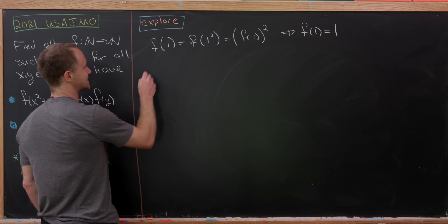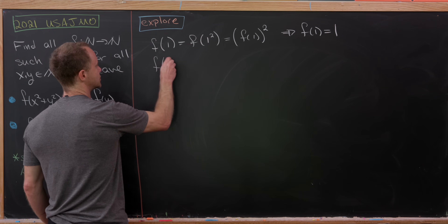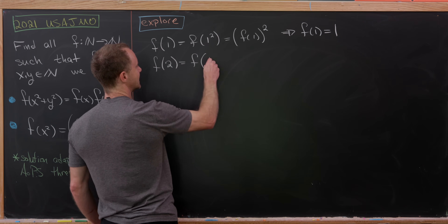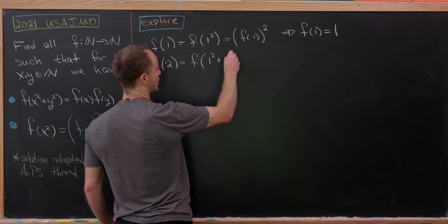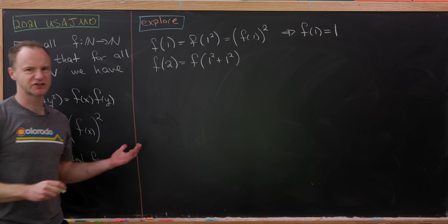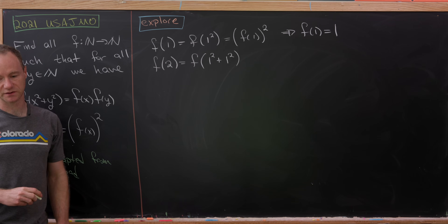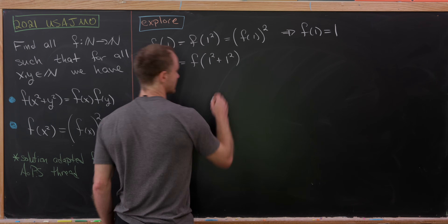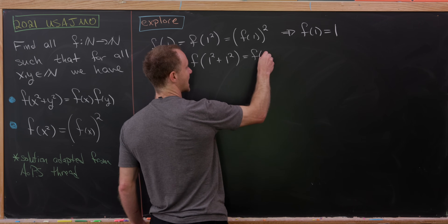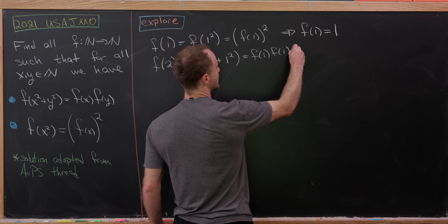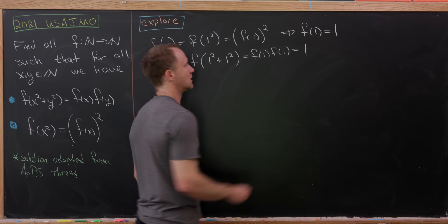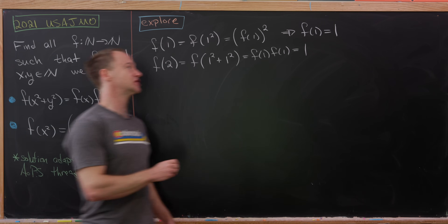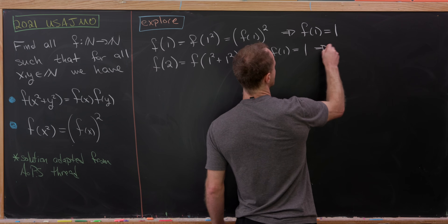Now let's calculate f(2). Since 2 = 1 + 1 = 1² + 1², we can use the first equation to write f(2) = f(1)·f(1) = 1·1 = 1. So f(2) is also equal to 1.